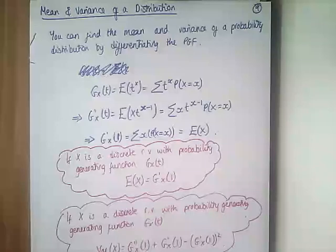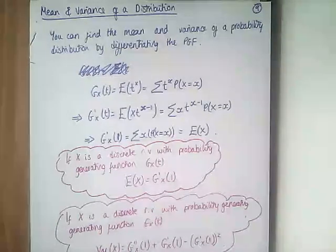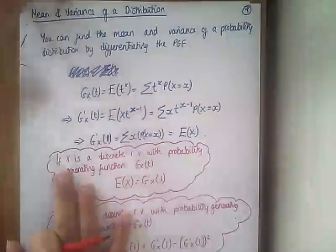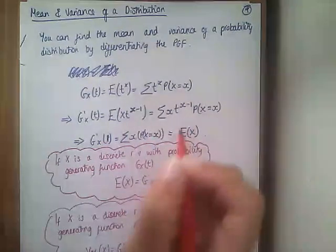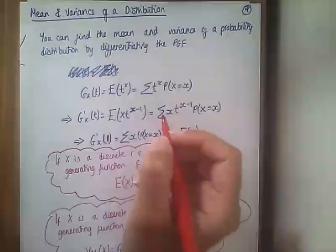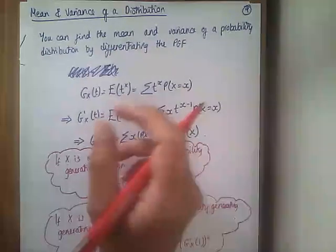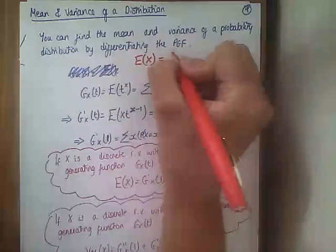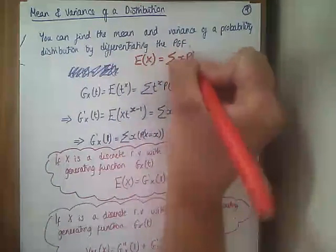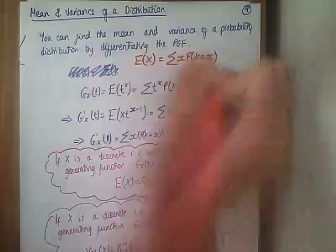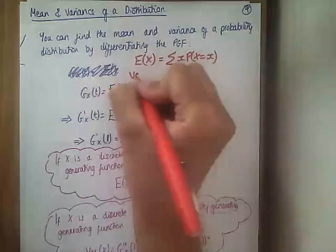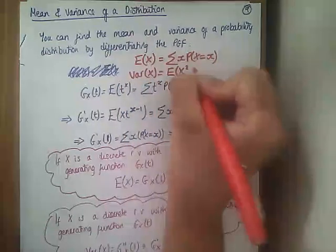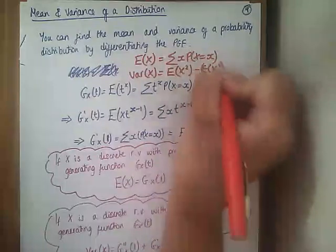I want you throughout this whole thing to hold in your head what we already know about the mean and the variance of a discrete distribution. So think year one, year 12 — the first ever topic we did on statistics. We were told that E(X) is the sum of x times P(X=x), and that Var(X) is E(X²) minus [E(X)]².